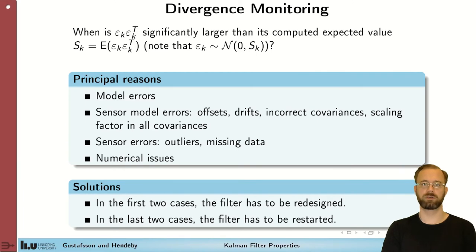Principal reasons for this could be model errors or sensor model errors. It could be offsets, drifts, incorrect covariances, scaling factors, or missing parts in the dynamic model, for example. Or sensor errors themselves. So outliers or missing data. Or it could be numerical issues.